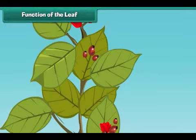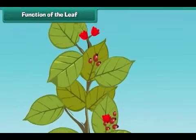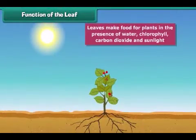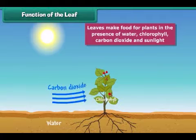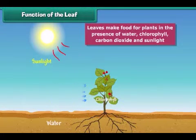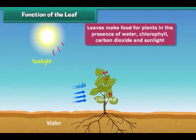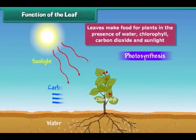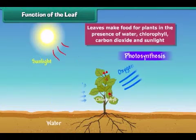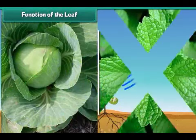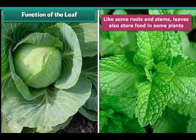Now let's discuss the main functions of a leaf. The main function of a leaf is to make food for the plant. For making the food, they use water, chlorophyll, carbon dioxide and sunlight. This process of making food is called photosynthesis. In this process, oxygen is released, and all living things require oxygen for breathing. Some plants like cabbage and mint store food in their leaves; we eat these leaves to get nutrition.